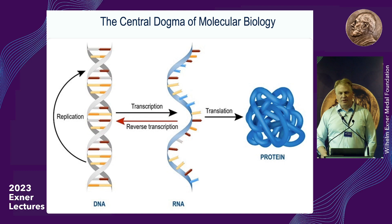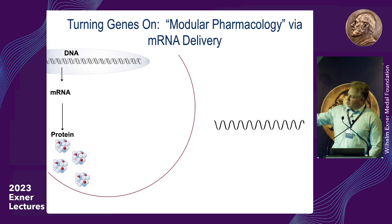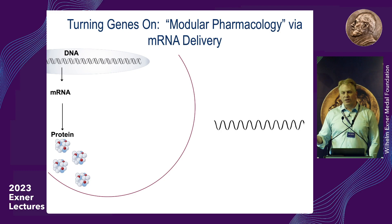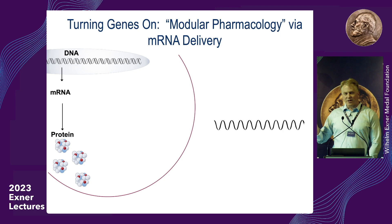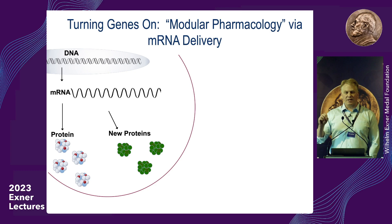There's huge interest now in using messenger RNA as a modular pharmaceutical. Since DNA turns into mRNA turns into protein in all of our cells, if we could just deliver messenger RNA inside a cell, we could make any protein we want — whether for a vaccine, to treat a genetic disorder, or to address cancer. This is called modular, a term coined by my colleague Phil Sharp at MIT: by just changing the sequence of the RNA, you change the order of letters and make a new drug to a new disease.